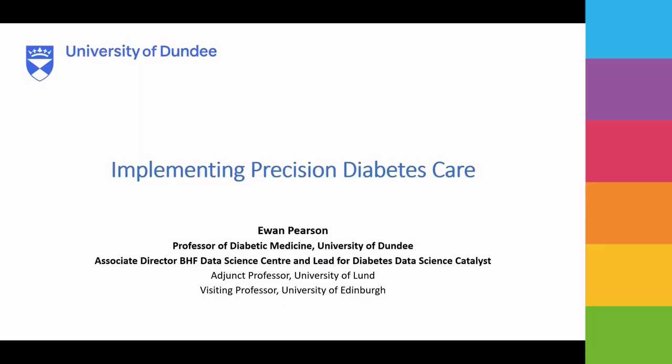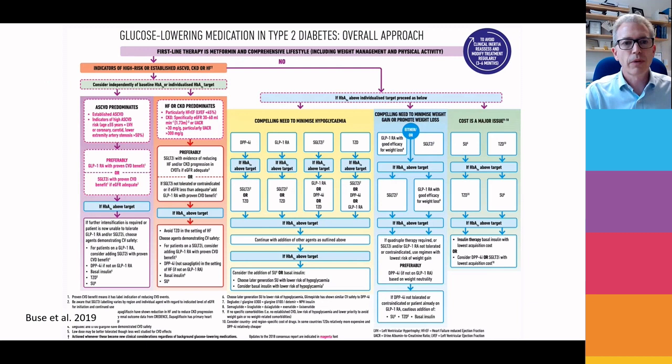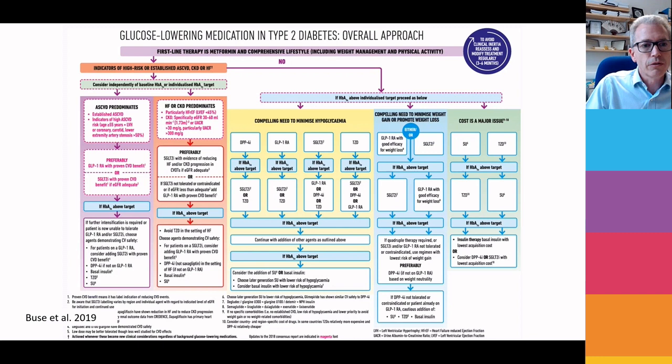Thank you very much. So I'm going to talk around implementing precision diabetes care. In recent years in type 2 diabetes, we have the very fortunate position that we have many drugs that we can use — seven drugs. This is one of the recent guidelines from the ADA and the ASD. And the challenge, of course, with having so many drugs is really knowing when to use which drug.